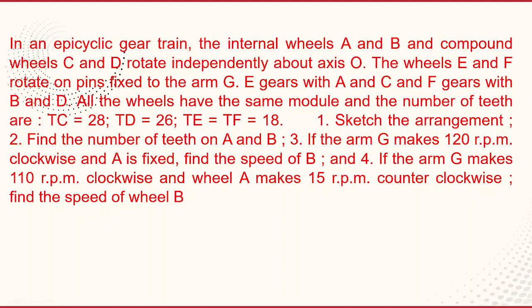A and B are internal gear wheels — that is, internal gear teeth A and B. C and D are compound gear wheels. These four gear wheels rotate about an axis O, that is the center. Wheels E and F rotate on pins fixed to the arm G. On the arm, E and F are rotated about pins. E gears with A and C; A is the annular wheel and C is the compound wheel. F gears with B and D; B is the annular wheel and D is the compound wheel. All the wheels have the same module and the number of teeth are given.